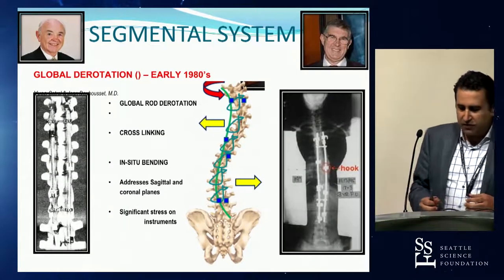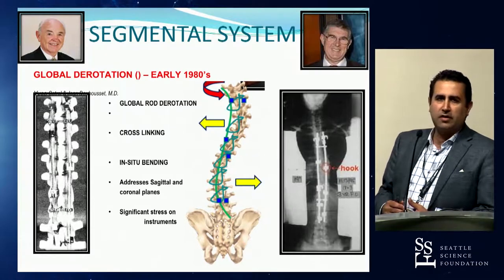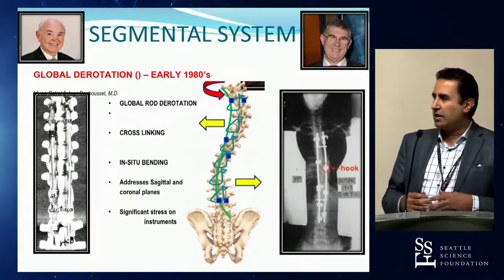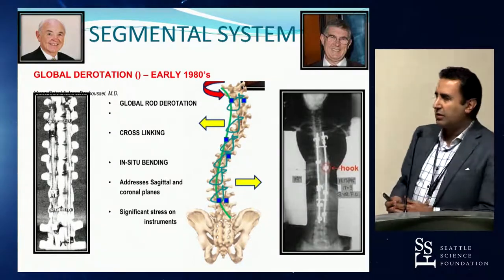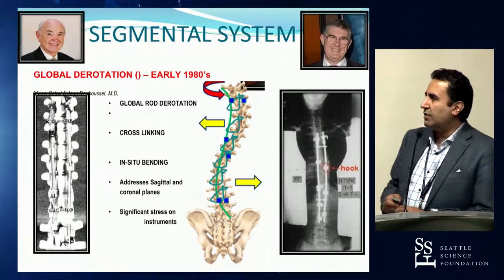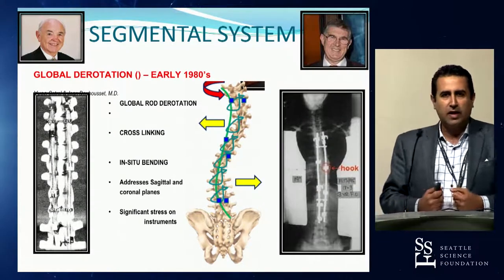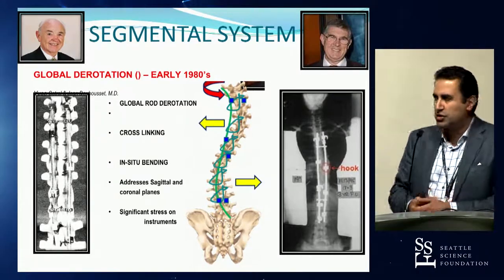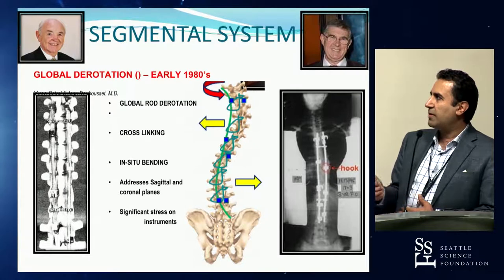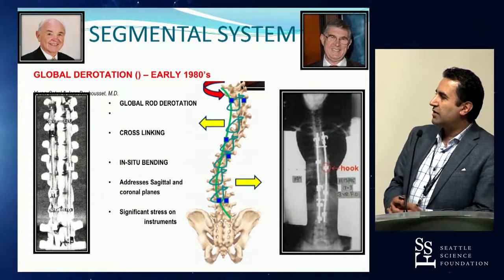Then came the concept of segmental fixation. Cotrel and Dubousset introduced another major step forward — the concept of global derotation. The deformity is a three-dimensional issue needing correction in three dimensions, so the rod was derotated to achieve further deformity correction. They used cross-links to share the load between sides, with powerful distractors and compressors in the sagittal and coronal planes for in situ bending. Of course, there was significant stress on the instrumentation and instrumentation failure was common. Dr. Dubousset has actually visited the Seattle Science Foundation — there's great heritage in what they did.